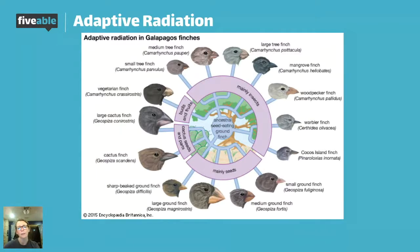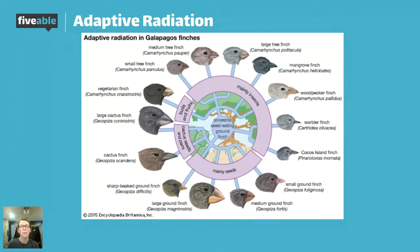Another big keyword that has to do with macroevolution is adaptive radiation. Think of radiation as radiating — to spread. Like the sun radiates, we have a lot of different things coming out of one central point. So adaptive radiation is having a lot of different things come off of one central species due to adaptations that usually have to do with some sort of environment.